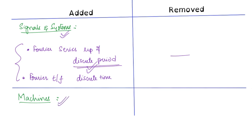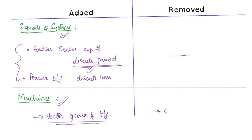Next is machines. In machines, the new topic that has been added is the vector group of transformers — this is a small but very important concept that has been added. One topic that has been removed is the starting of DC motors. Note: only DC motors; the starting of induction and synchronous machines is still in the syllabus — only DC motors starting has been removed.